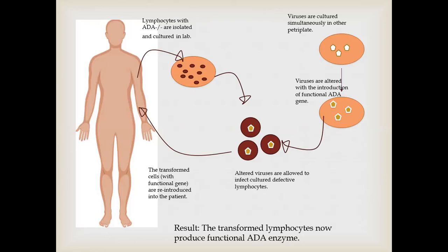Now the procedure is the same. If this is the patient in which ADA deficiency is present, then the lymphocytes with ADA deficiency are isolated and cultured in the lab. Simultaneously, viruses that are capable of infecting these lymphocytes are cultured in another petri plate. These viruses are then altered with the introduction of the functional ADA gene and are then allowed to infect the defective lymphocytes.